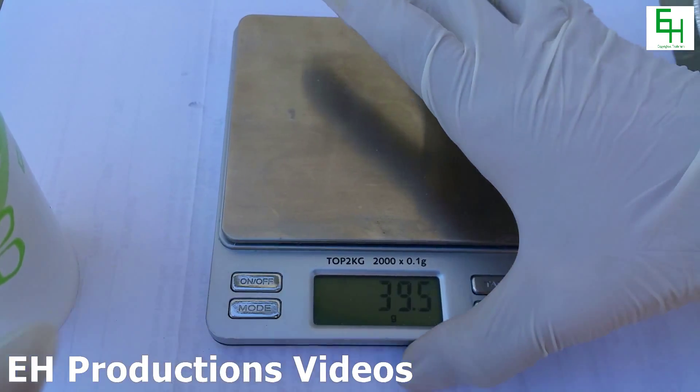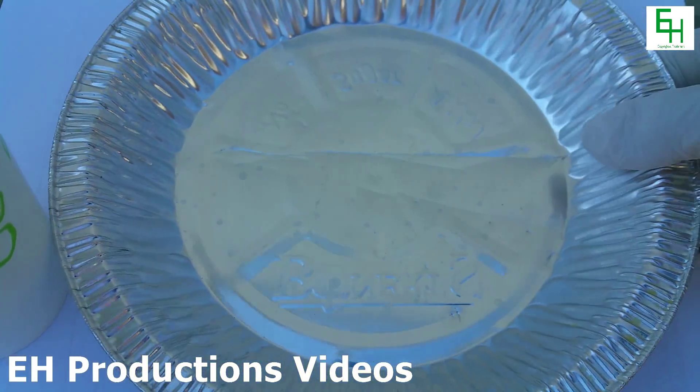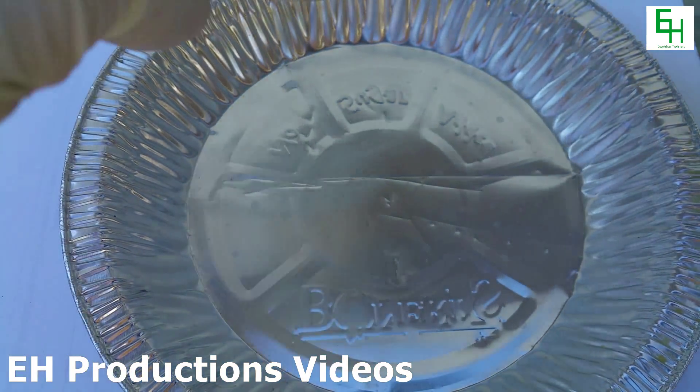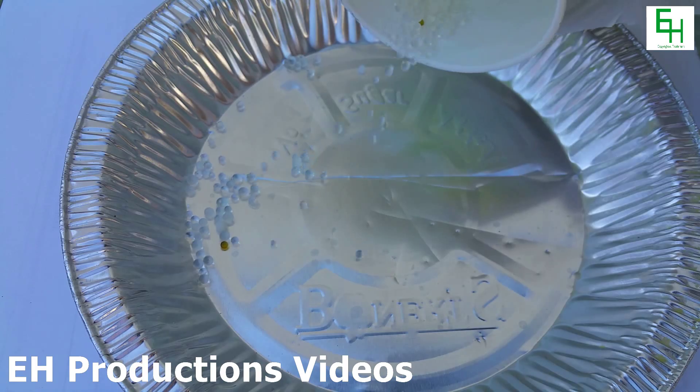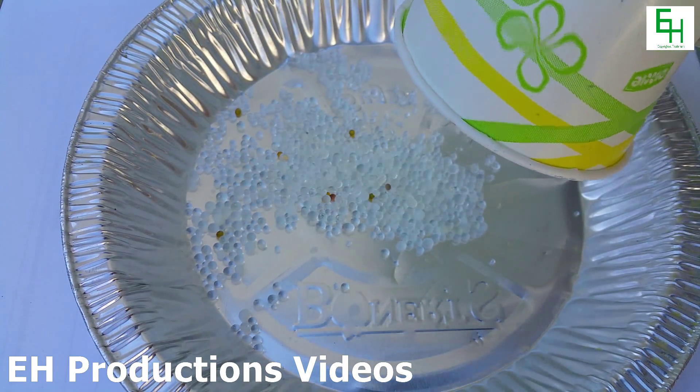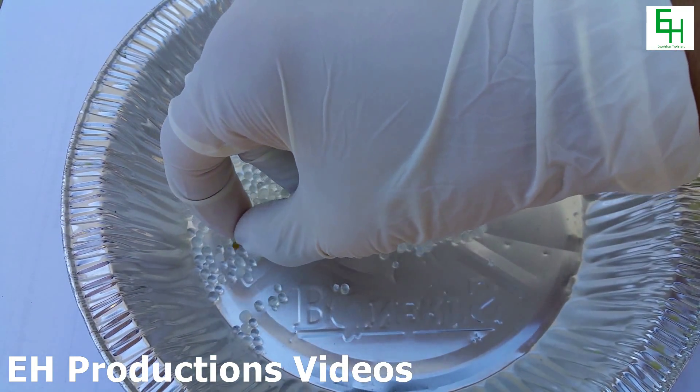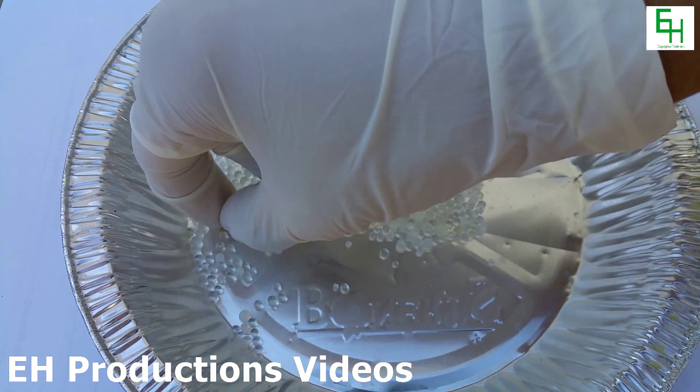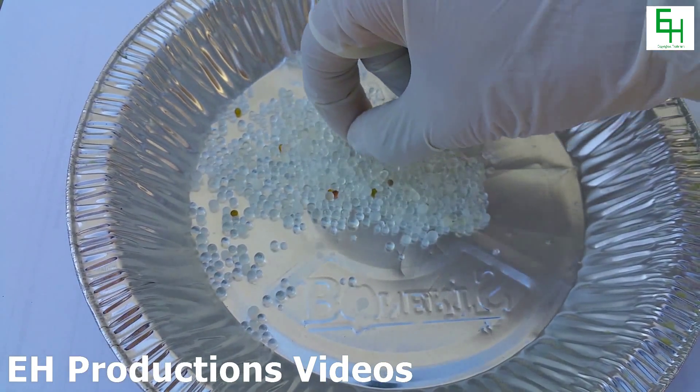So next what you want to do is you want to now get an aluminum pie pan and I'm going to carefully pour in the silica gel like so. This is so we can pulverize the silica gel. Now before you pulverize it take your time to take out all the discolored beads like so.